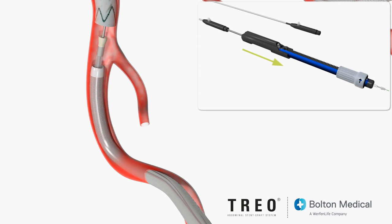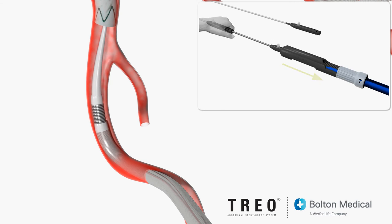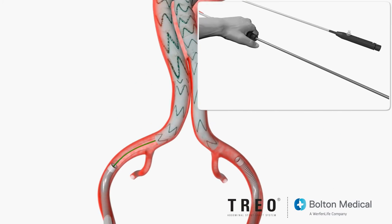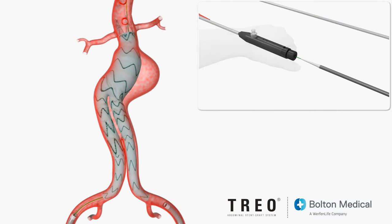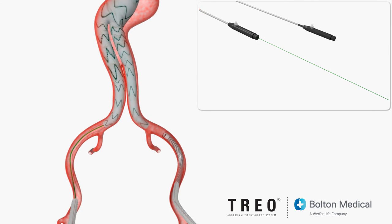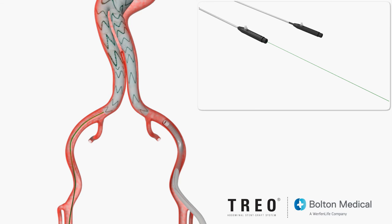The ipsilateral leg extension delivery system can now be removed from the main system sheath. It is not necessary to reseat the tip of the ipsilateral leg extension delivery system when it is used in conjunction with the main delivery system sheath. Accessory devices may now be used with the sheath of the main delivery system. If desired, the leg extension delivery system on the contralateral side may be disassembled in the same manner as the main delivery system in order to provide a sheath for the use of compatible accessory devices.